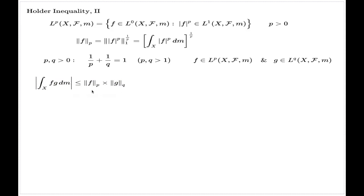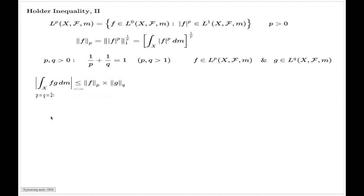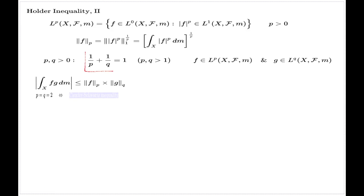You have to prove it the way we proved it in the earlier comments which preceded these ones. Now, after that out of the way, let's just try to prove this. Another comment: in this inequality, in general it's called Hölder inequality. In the special case when p and q are both equal to 2, they satisfy this relation, and this is called the Cauchy-Schwarz inequality.